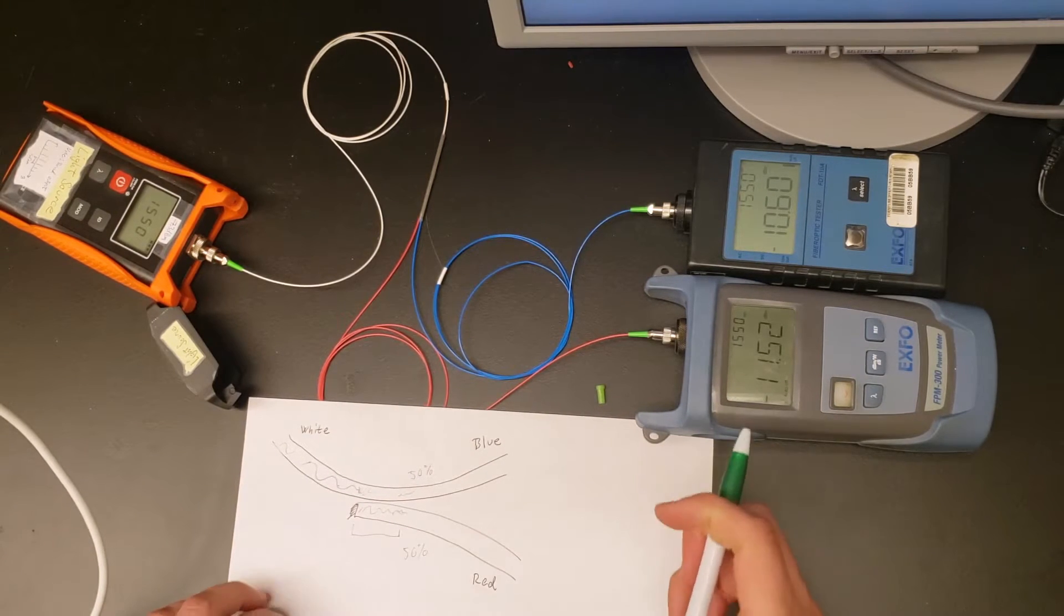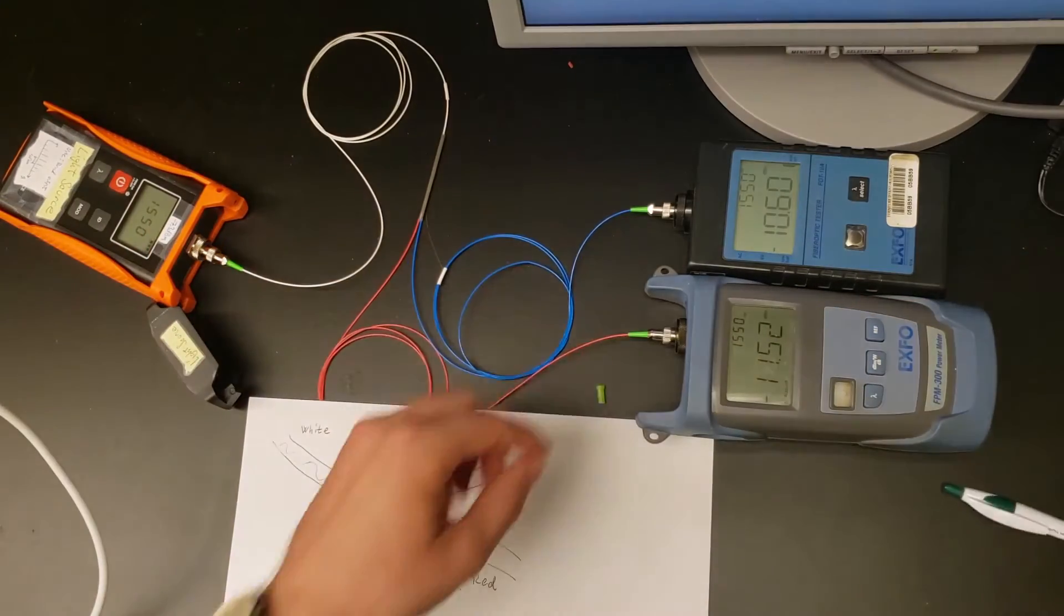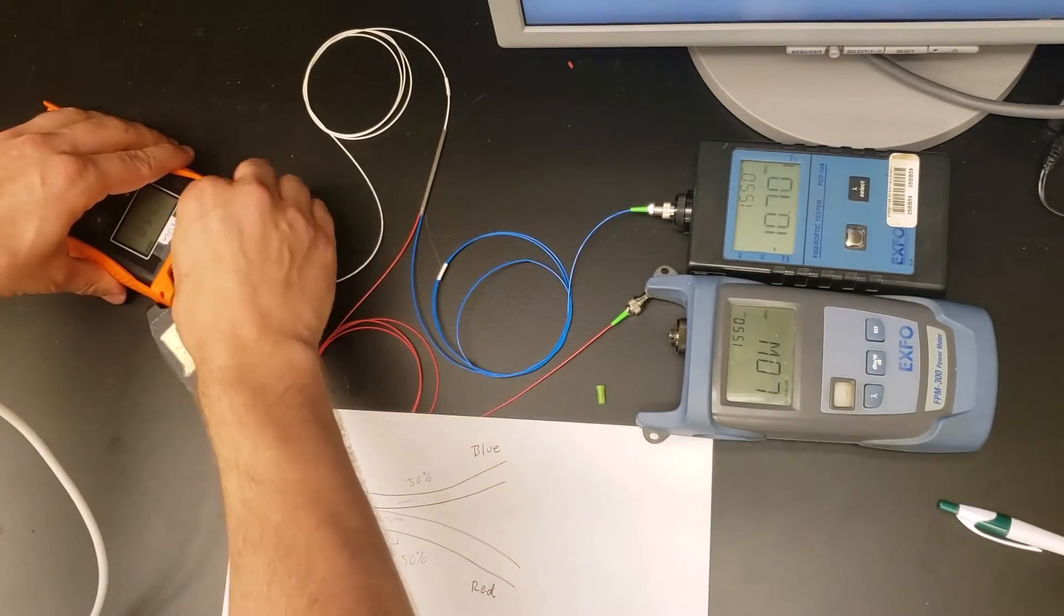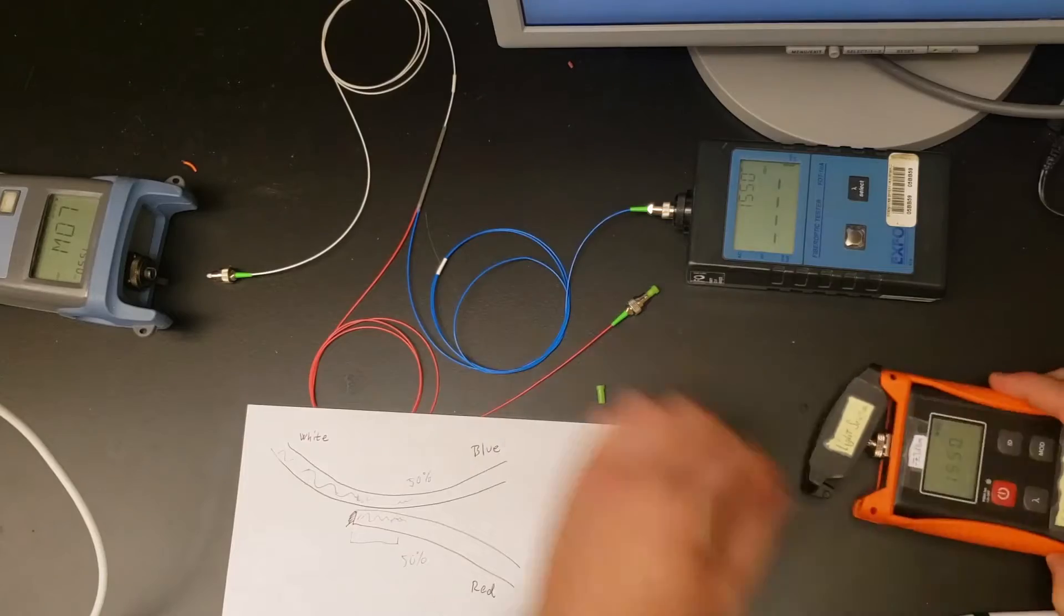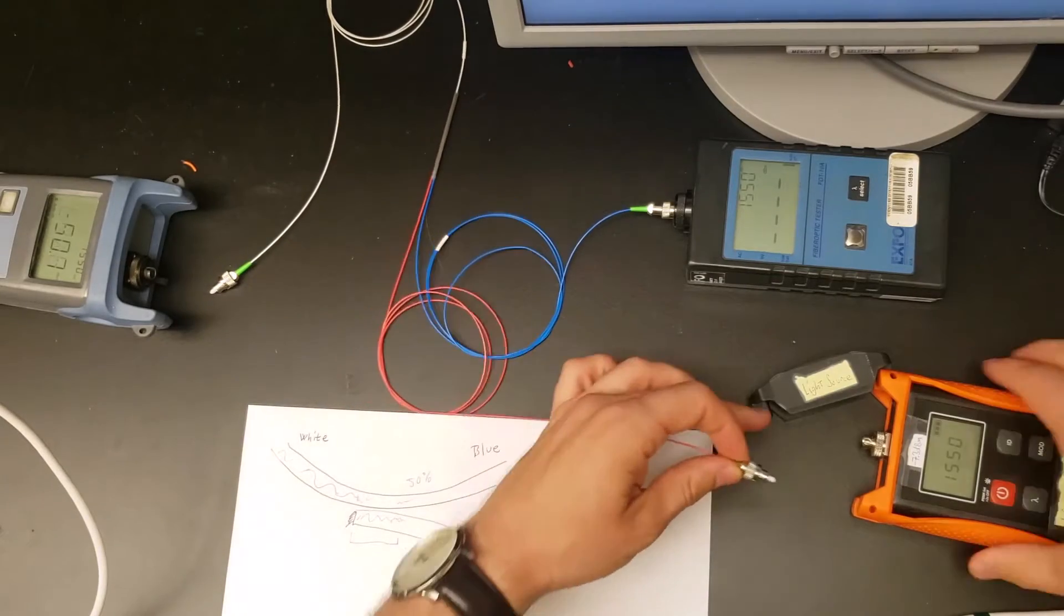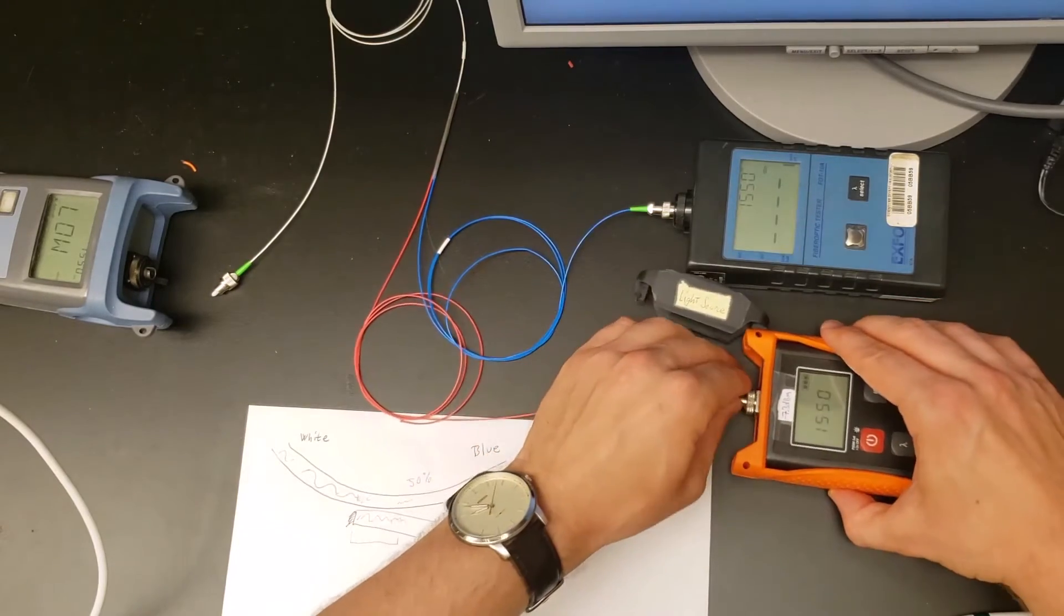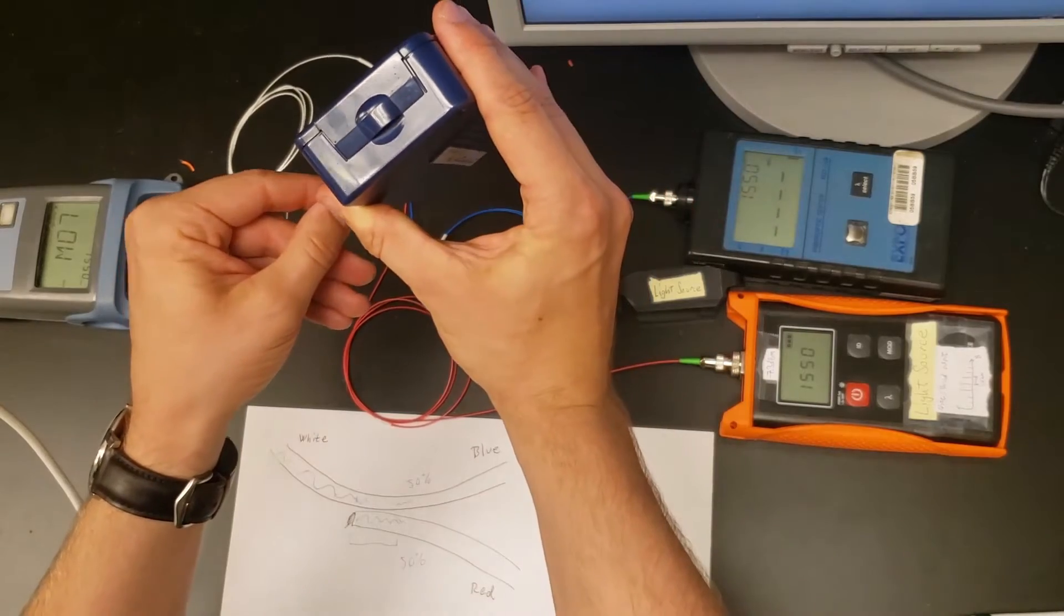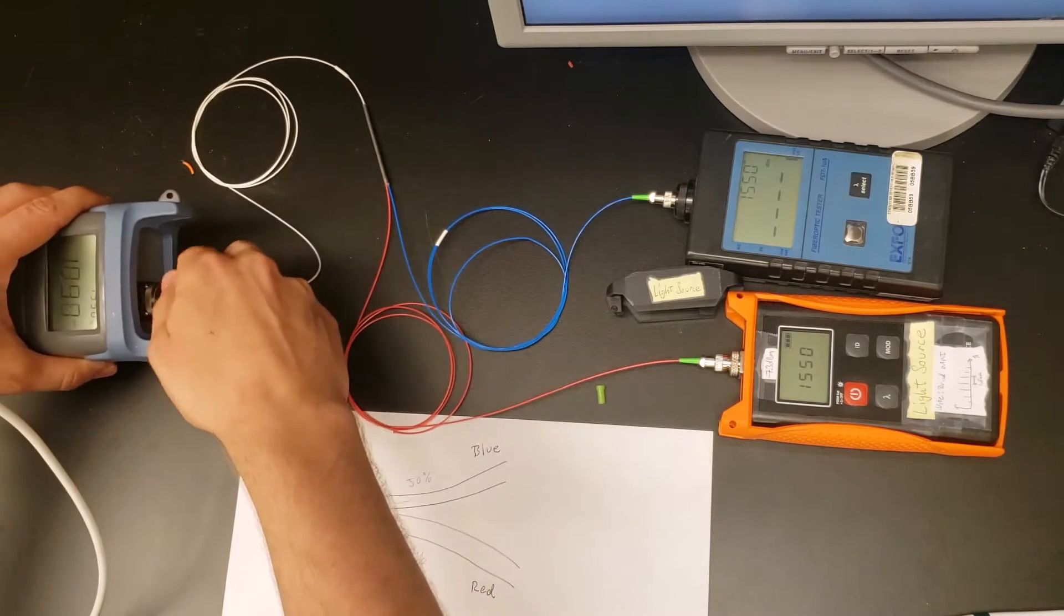With this in mind, let's see what happens if we swap these. Instead of sending light into the white port, we'll send light into the red one and put this power meter over here. Let me disconnect this, put a cap on, and swap these two. I'm going to make sure I clean this properly.